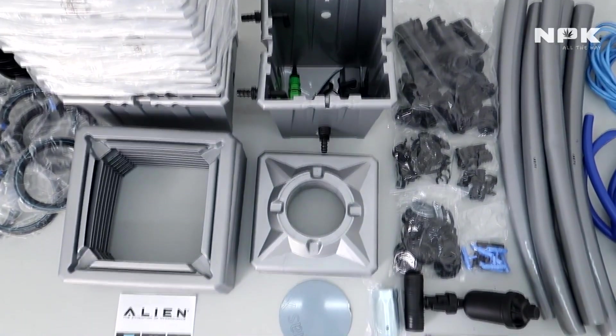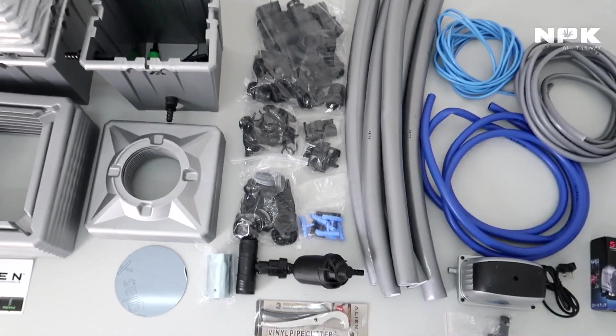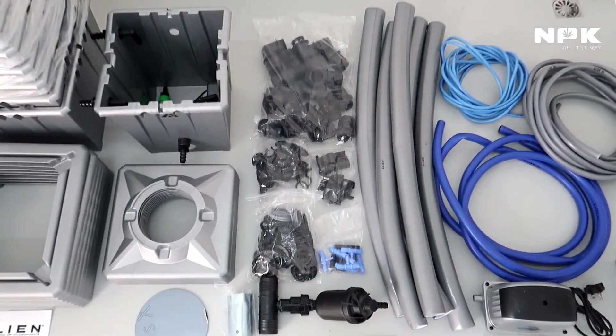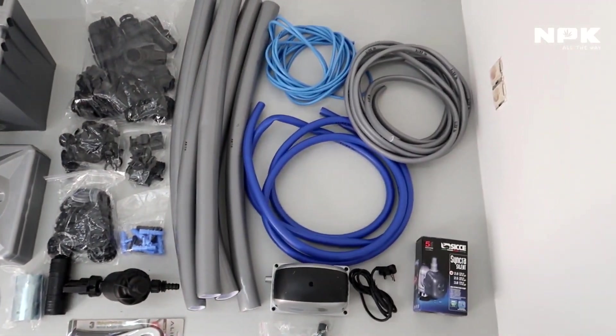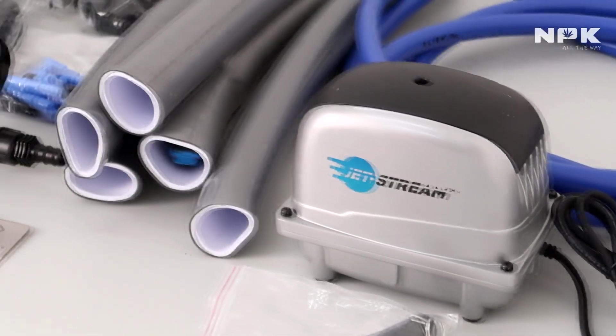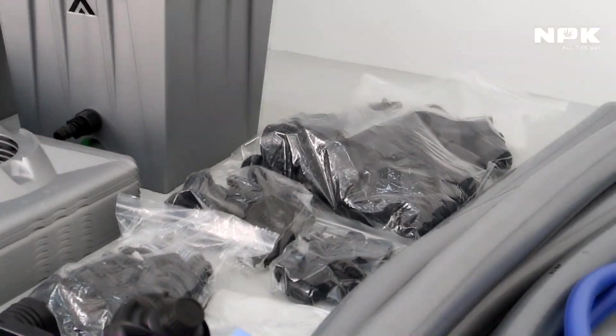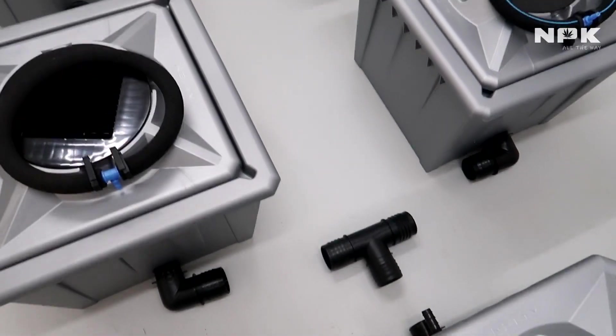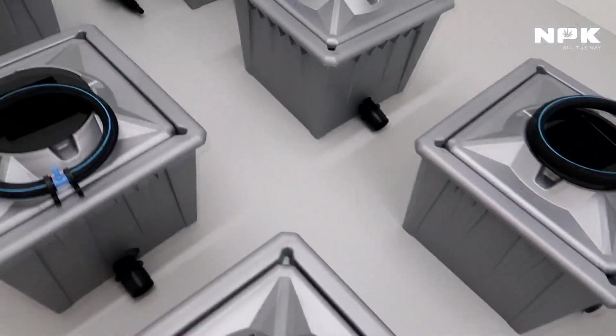Here we have our filter, the scissors we've got to cut the pipes, and we have 50 millimeter piping with all the others as well. Our Jet Stream pump will make sure that our system gets enough air. It's a very nice system they have, so let's get to it.